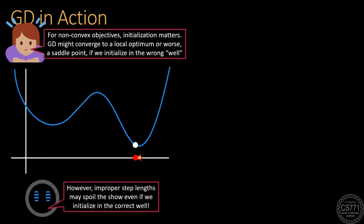However, note that bad choice of step lengths can undo the benefit of good initialization. For example, even if we initialize correctly but then choose a very large step length, then we may overshoot the global optimum and land up in the other well instead and then converge to the wrong local minimum.